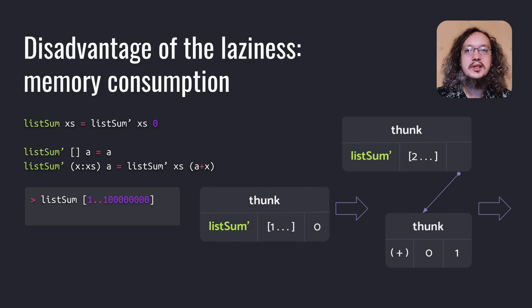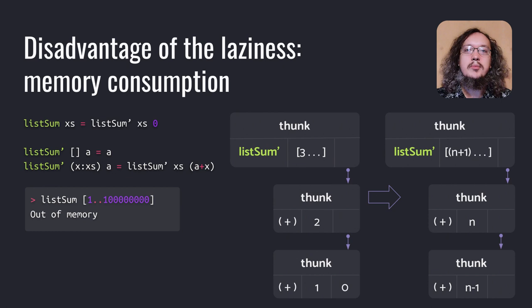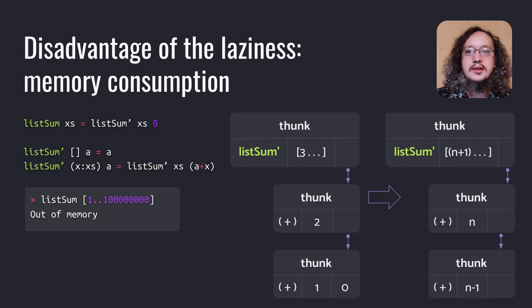Look at the right side of ListSumPrim — its second argument is now also a THUNK, created by the application of plus to 0 and 1. Do we really need to reduce it now? No. We can reduce the main THUNK without getting the result of this sum — we just need to apply the function again to different arguments. And now we have a new THUNK: ListSumPrim applied to the list without its first two elements, and to another THUNK — a sum of 2 and the result of our first still-unevaluated sum. With every further step, the THUNK representing our accumulator will grow.